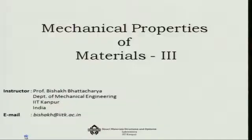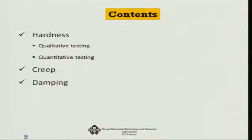In the final series on mechanical properties of materials, I have chosen three very important properties. One is hardness, where I will explain qualitative and quantitative testing of hardness and the relationship between hardness and strength, which is very important in system design. Secondly, I will talk about creep, and finally about damping. These are the three important mechanical properties we will cover in this final series. So first, let us talk about hardness.